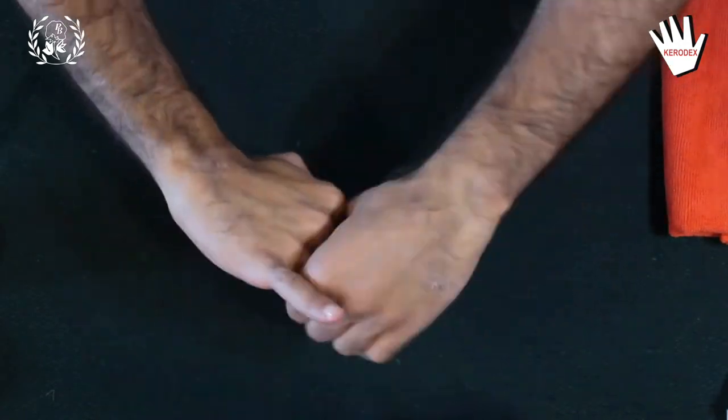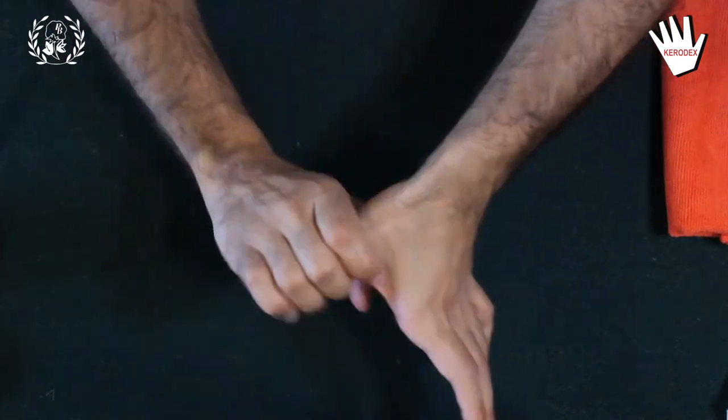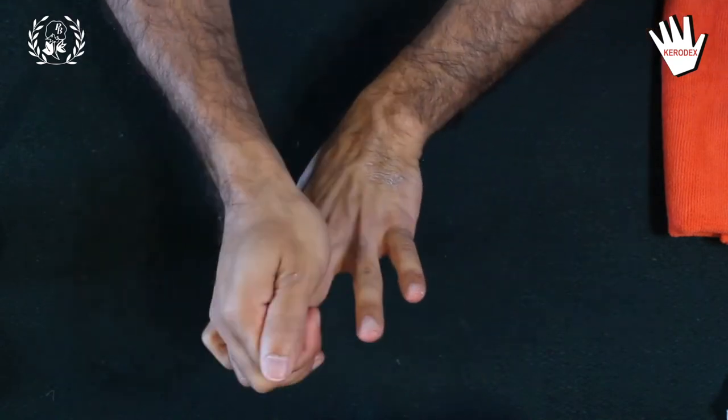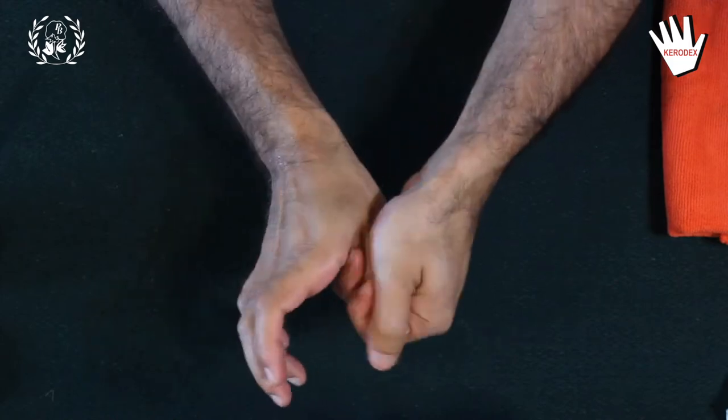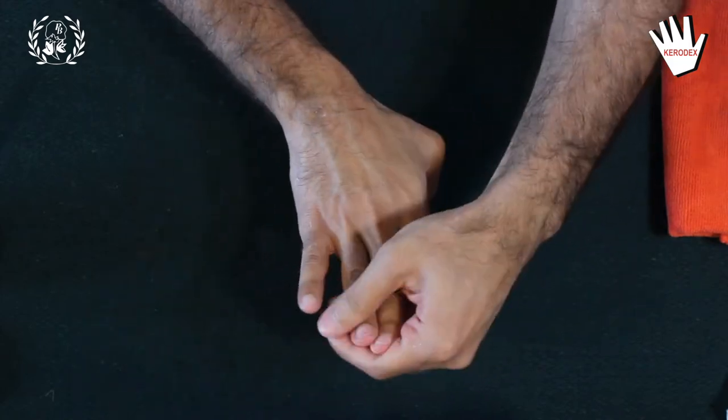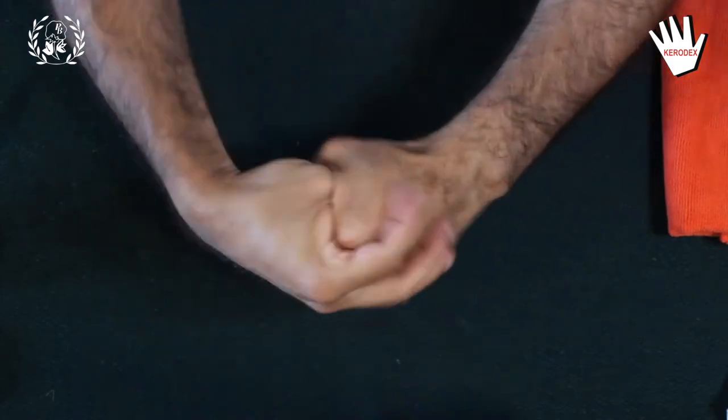4. Kerodex Barrier Cream should be generously applied on the front and back of the hands as well as up to the wrists and forearms if required, but especially around the nail cuticle to avoid any harmful chemicals, paint, etc. from penetrating into the skin.